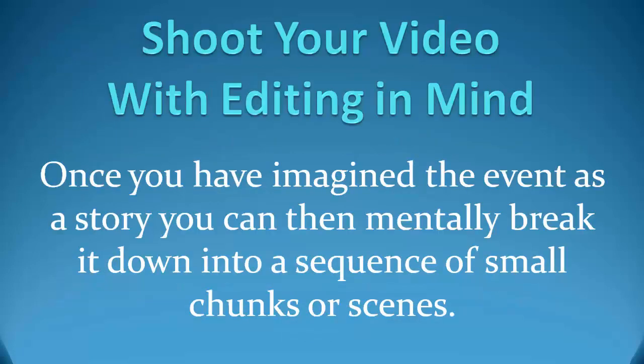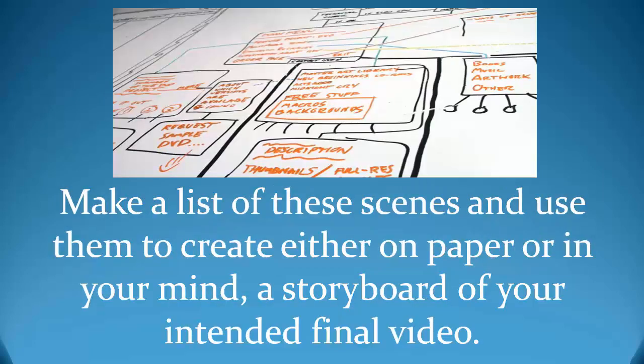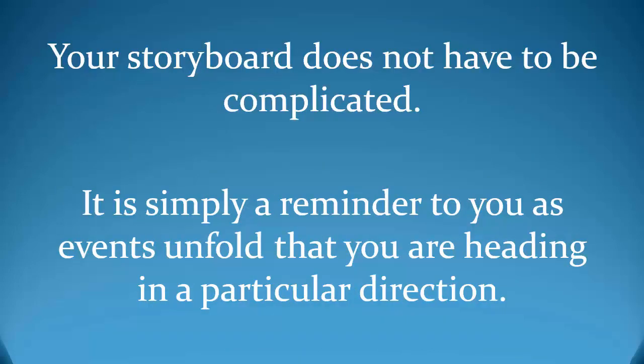By doing this you can then shoot with editing in mind. Once you have imagined the event as a story, you can then mentally break it down into a series of small chunks or scenes. Make a list of these scenes and use them to create either on paper or in your mind a storyboard. Your storyboard doesn't have to be hugely technical or complicated — it is simply a road map or reminder to you of the direction in which you are heading and the shots you think you will probably need.